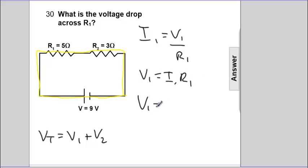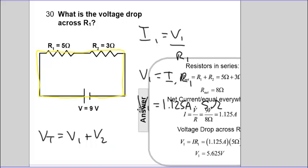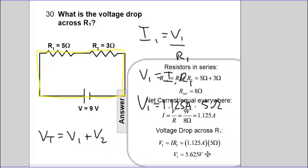V1 is, I think it was 1.125 amps, times that resistance, which is going to be 5 ohms, and that total voltage will be the product of those two. We get 5.6 volts.